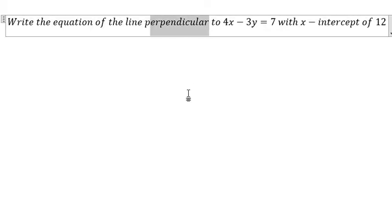Now I will show you how to answer this: Write the equation of the line perpendicular to 4x - 3y = 7 with x-intercept of 12.